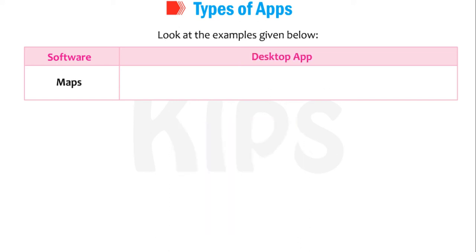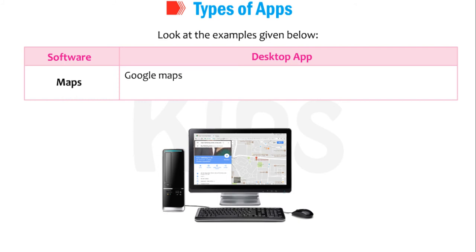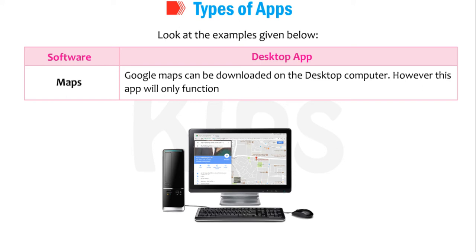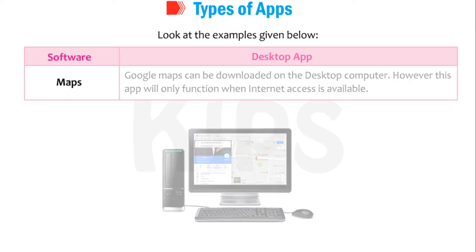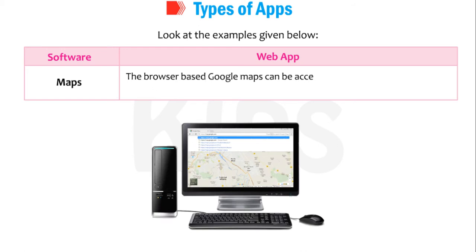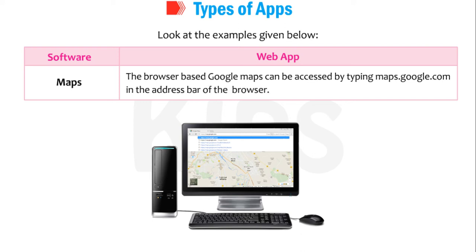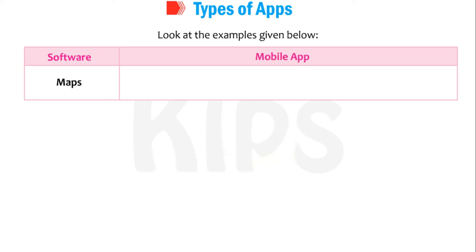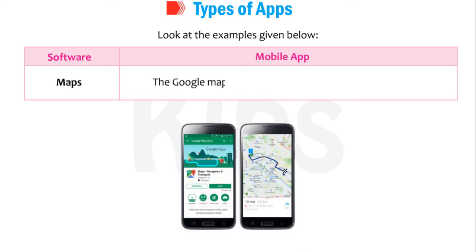For Maps: Google Maps can be downloaded on a desktop computer; however, this app will only function when internet access is available. As a web app, the browser-based Google Maps can be accessed by typing maps.google.com in the address bar of the browser. The Google Maps app is also available in the Google Play Store.